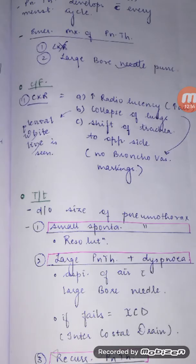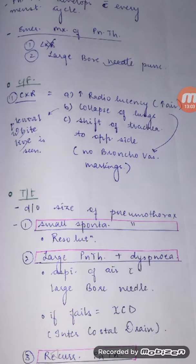The emergency treatment: if a patient comes in severe distress with sudden breathlessness, tachypnea, palpitations, and anxiety, and the diagnosis points toward pneumothorax, the emergency treatment is a large bore needle puncture. Don't wait for a chest X-ray if the patient is unstable — go directly for the large bore needle puncture.